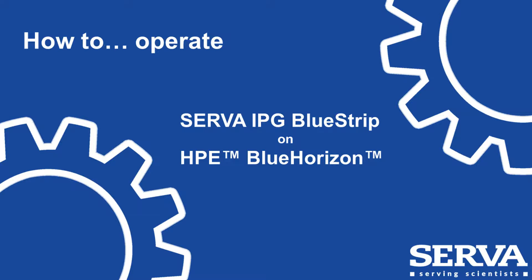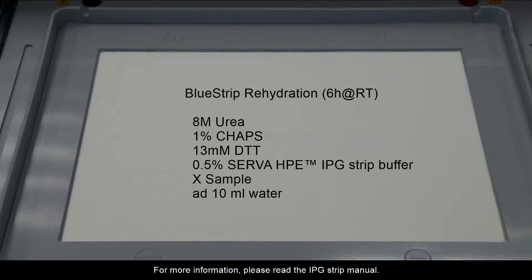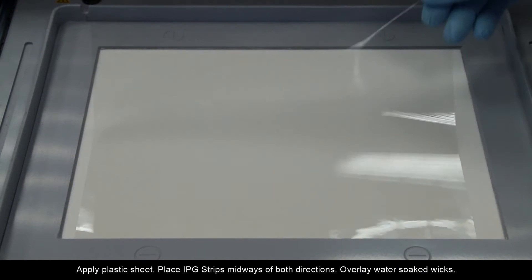How to operate Serva IPG Blue Strip on HPE Blue Horizon. For rehydration, use 8M urea, 1% CHAPS, 13mM DTT, 0.5% strip buffer, your amount of sample, and add to 10 mL of water.